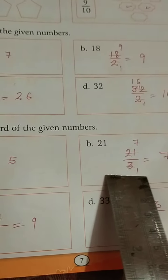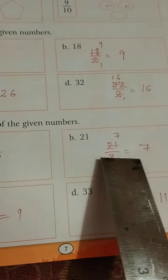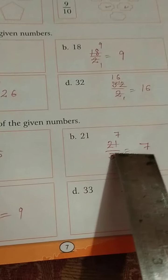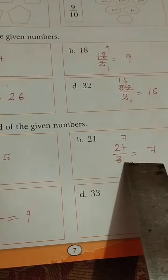21 means 21 divided by 3, we have to find out the 1 3rd of 21, then after cutting we are getting 7. With the common number 3 we are cutting numerator and denominator. 3 1 is 3, 3 7s are 21, 7 we are getting.